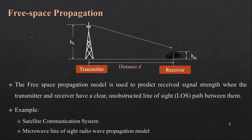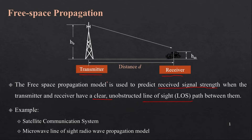Hello and welcome to the wireless communication lecture series. We are going to start with a very important theory: the free space propagation model. This model is used to predict received signal strength when the transmitter and receiver have a clear, unobstructed line-of-sight path between them. This scenario happens in satellite communication systems as well as in microwave line-of-sight radio wave propagation.